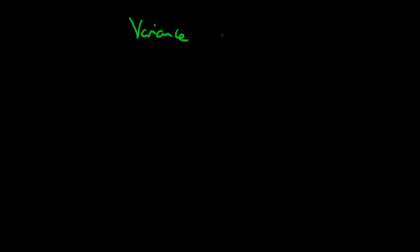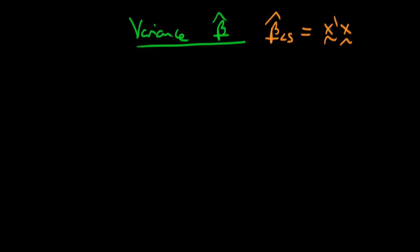In this video we're going to be finding the variance of our least squares estimator beta hat, under the assumption that we have no serial correlation of errors and that we have homoscedastic errors. Just reminding ourselves of what the explicit expression for beta hat least squares is in matrix form: it's equal to (X'X)⁻¹ times X'Y, where Y is the dependent variable. In order to find the variance of this expression, we need to make use of a few general results.